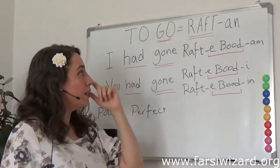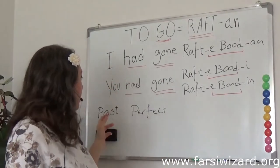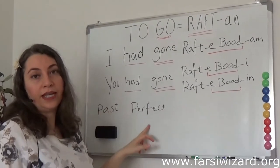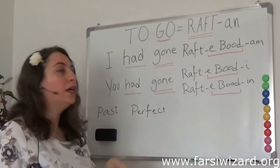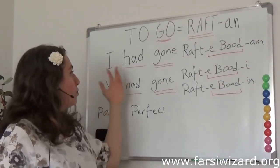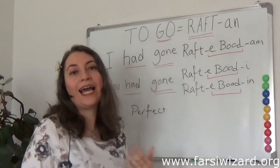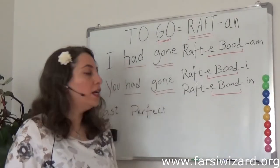This verb tense is called past perfect in English. Examples would be: I had gone, I had eaten, I had seen.